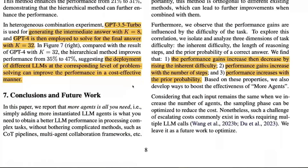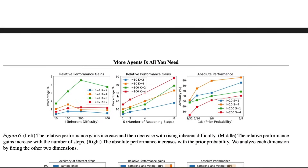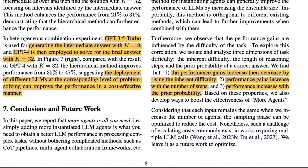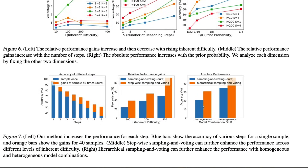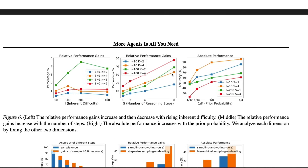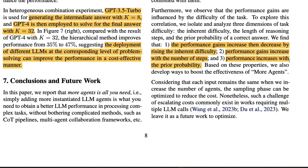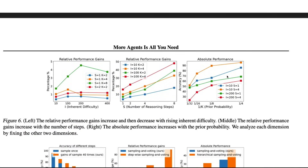At easier steps you can use GPT-3.5 Turbo, and for the final answer you use GPT-4 — a layered approach that saves cost and enables faster inference. The final findings: performance gains increase then decrease as you raise the inherent difficulty; performance gains increase with the number of reasoning steps; and performance increases with the prior probability — if the model had a prior probability of predicting the right output, the gain is there when models are stacked.